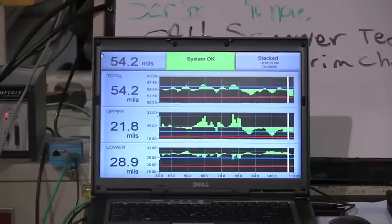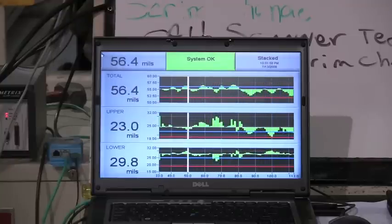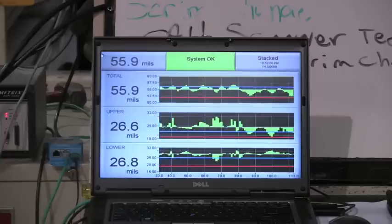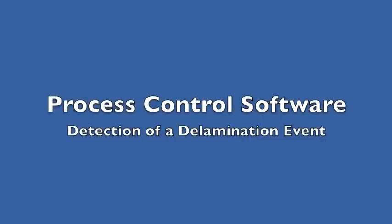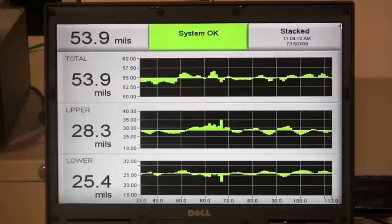The line operators monitor screens showing all three measurements to determine product quality. Each measurement is shown as a deviation from the average thickness. Limits are set to provide instant feedback if any layer of the sheet exceeds its tolerance.